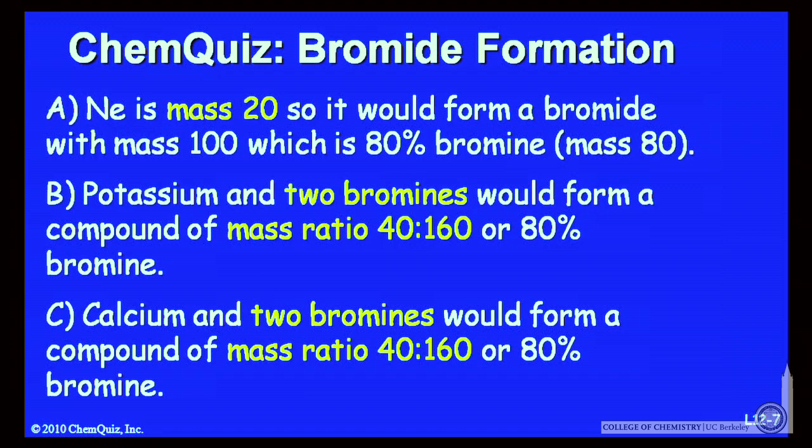C, calcium and two bromines would form a compound with mass ratio 40 to 160, or 80% bromine. Think about those three possible explanations and make another selection.